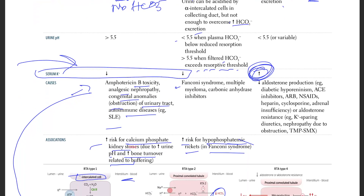Causes of RTA type 4 include decreased aldosterone production from diabetic hyporeninemichism, ACE inhibitors, ARBs, NSAIDs, heparin, cyclosporine, and adrenal insufficiency. Aldosterone resistance causes include potassium-sparing diuretics, nephropathy due to obstruction, trimethoprim, and sulfamethoxazole.